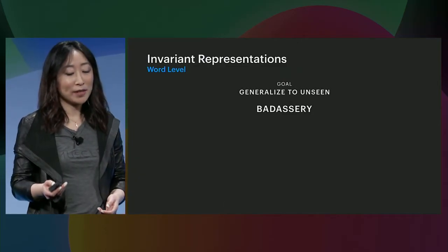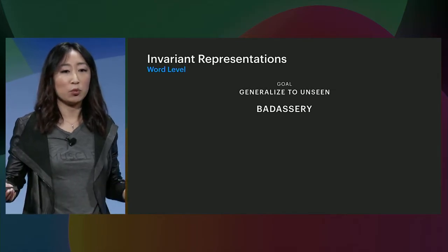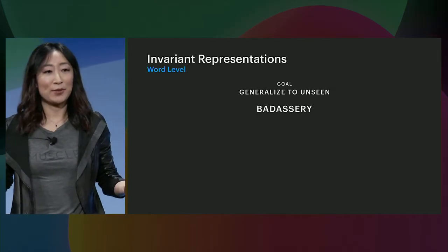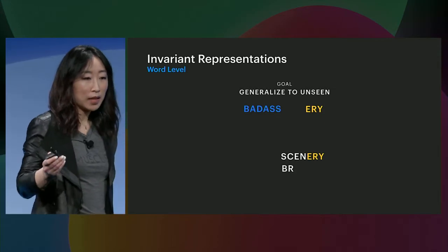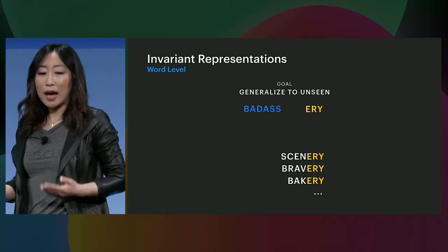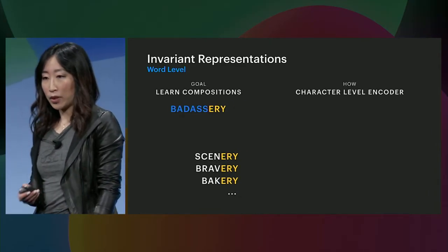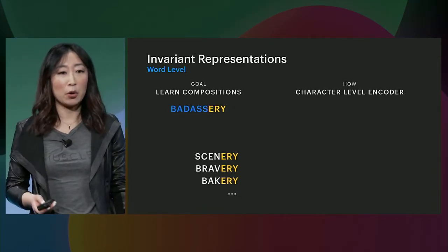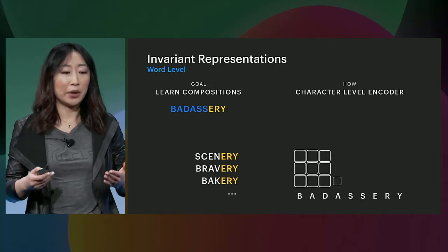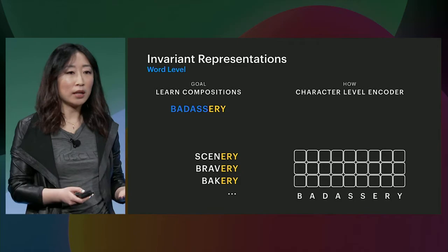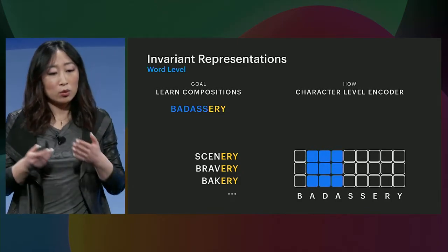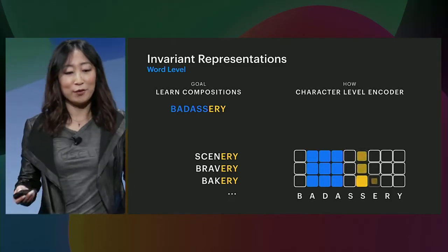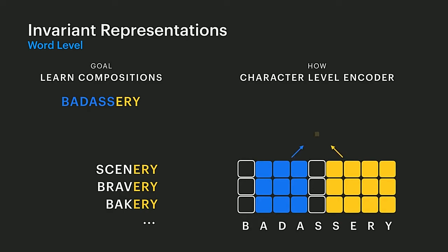First, for learning invariant representation, our goal is to be able to generalize to unseen words. For example, given the word 'badassery,' which I've never seen before, I know the word 'badass,' and I know many other words that share the same surface form — so as a human, I can make a guess. To teach neural networks to do that, one approach is using a character-level encoder. We feed very fine-granularity input to the model, such as character embeddings or byte embeddings, then learn convolution filters to extract character n-gram features of different granularities, and finally combine those features to generate a learned representation for the new word.